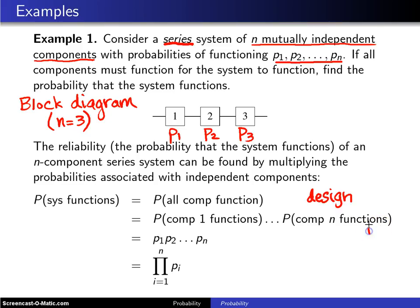Now because of the mutual independence, we know that the probability all of them function will be the product of P1 times P2 all the way up to P sub N. And that's what you get here.